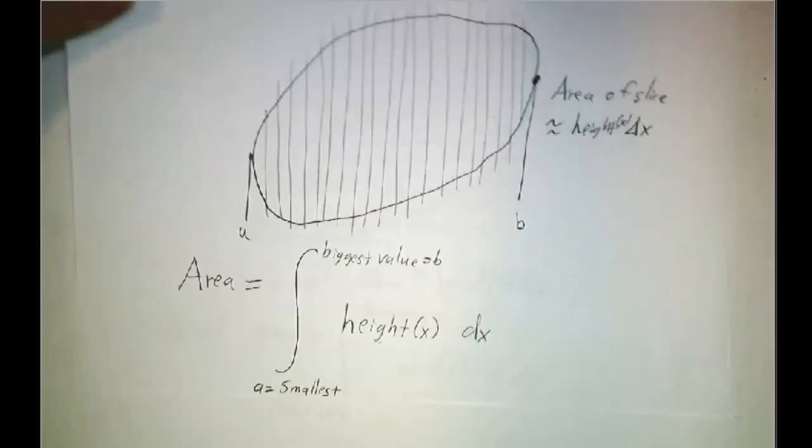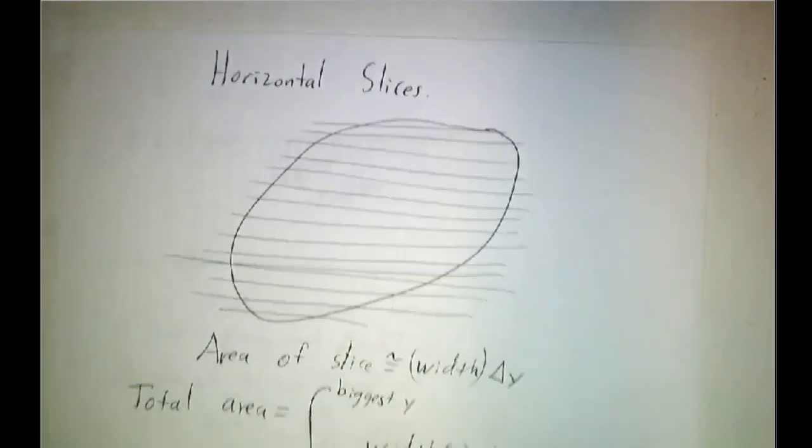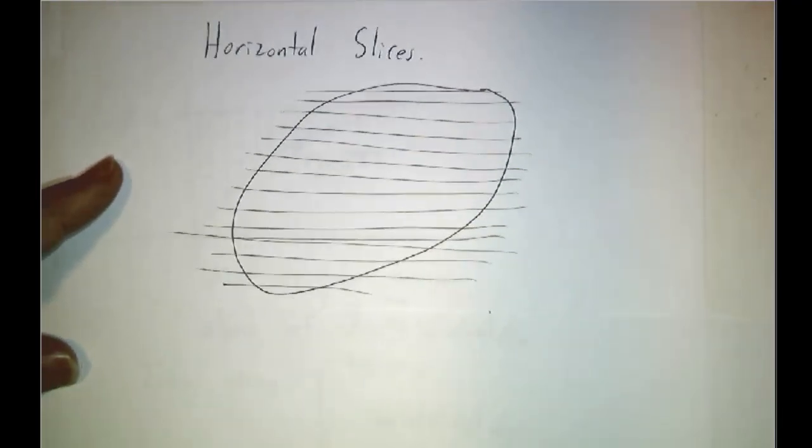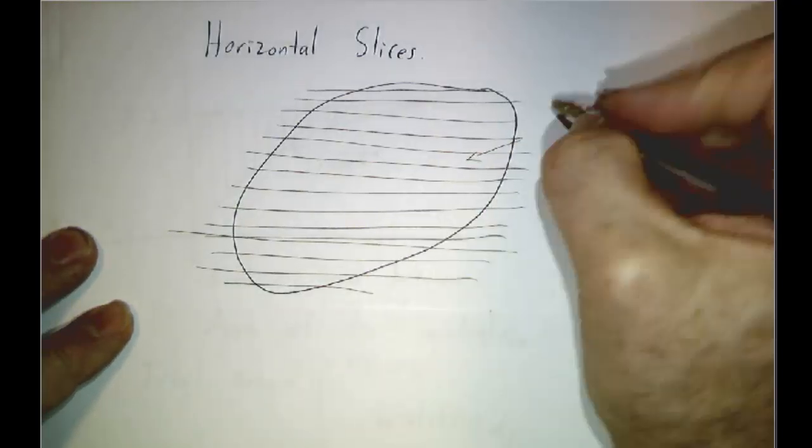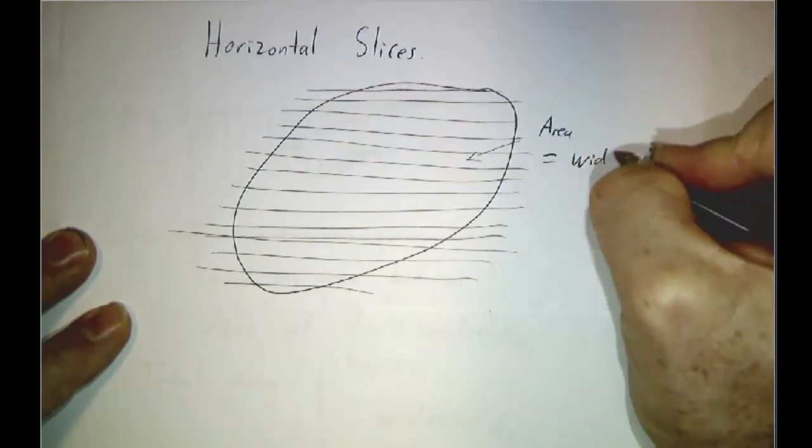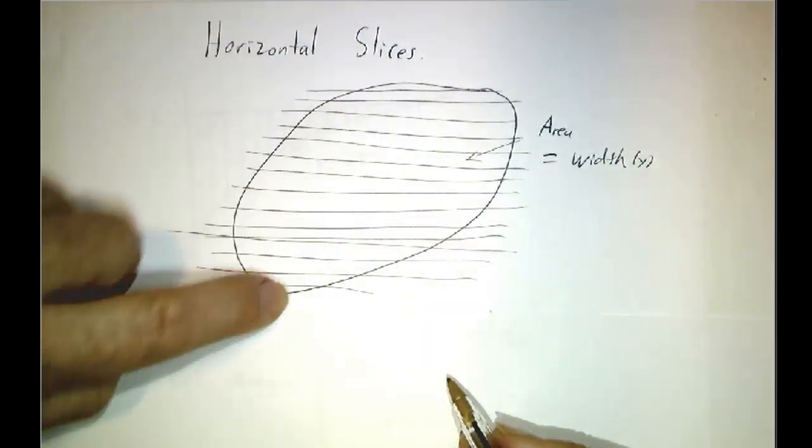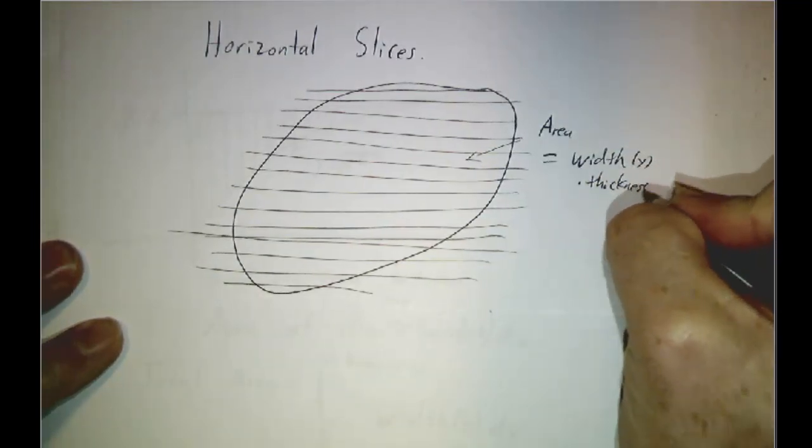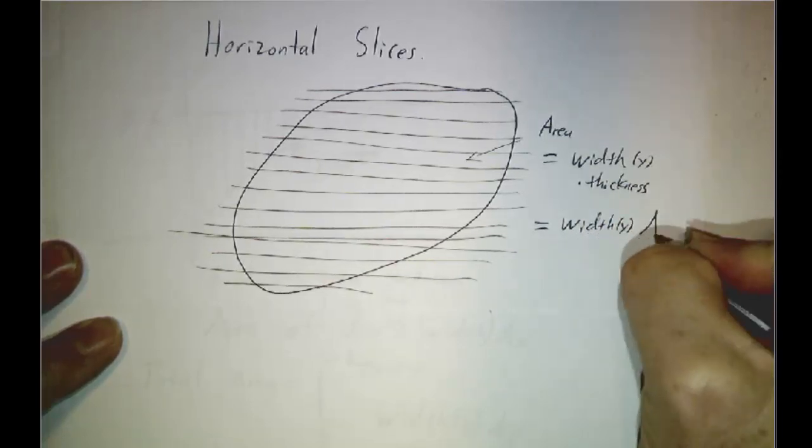Now I want to show you a different technique for evaluating the area of the same region. And that's to put things through our Vegematic sideways. Instead of cutting things into vertical slices, let's cut them into horizontal slices. And we say, what's the area of each slice? Well, the area of each slice is going to be its width, which depends on y. Over here the width is 0 and then it grows and then it shrinks again. Times the thickness, and the thickness is delta y.